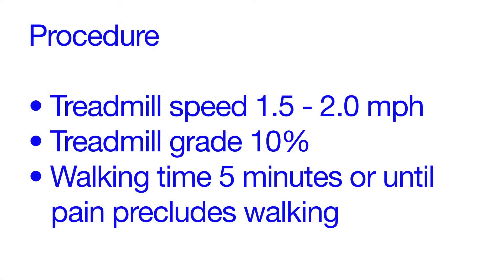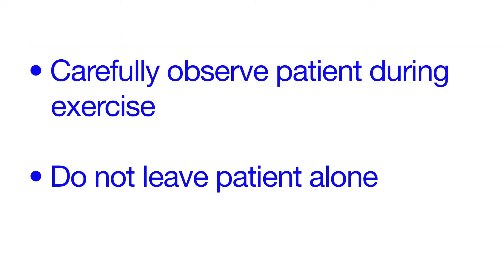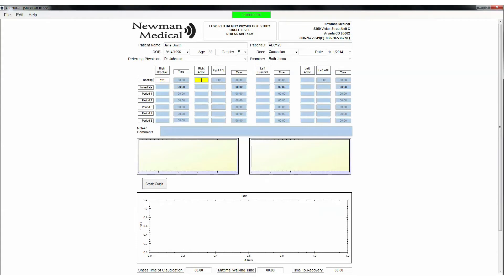Set the treadmill speed to 1.5 or 2.0 mph at a 10% grade, depending on the patient's mobility. Standard walking time is 5 minutes or until pain or other factors such as angina, shortness of breath, or fatigue limit further walking. Carefully observe the patient for distress during exercise — do not leave the patient alone in the room. The system will keep track of times for you, but you can enter a different time if needed. If claudication occurs, note the time, onset, severity, and total walking time, and whether it was claudication or some other cause that stopped the patient.